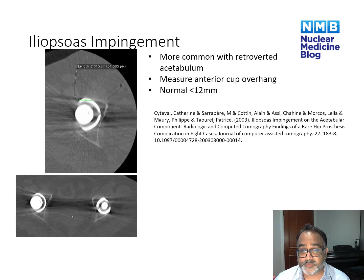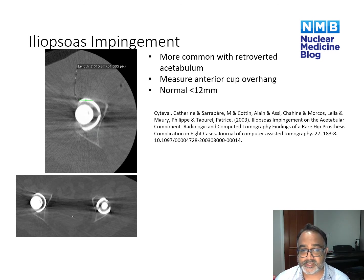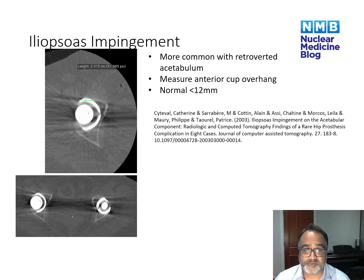There are two more CT findings that can indicate impingement. Iliopsoas impingement can be due to retroverted acetabular components — the iliopsoas tendon runs over the anterior aspect of the acetabular component. By measuring the anterior cup overhang, which should be less than 12 millimeters, if you have a retroverted acetabular component with anterior cup overhang of more than 12 millimeters, the patient may be predisposed to iliopsoas impingement, and this should be raised in your report.